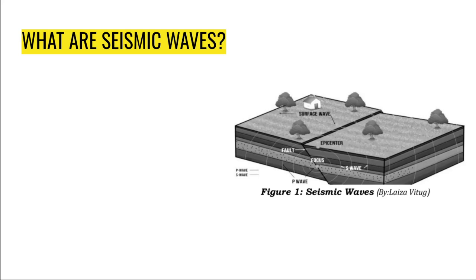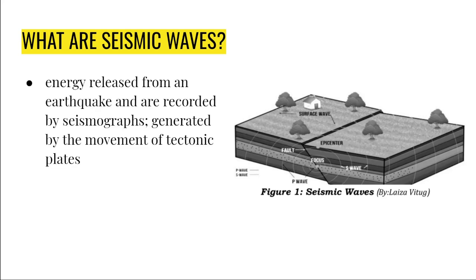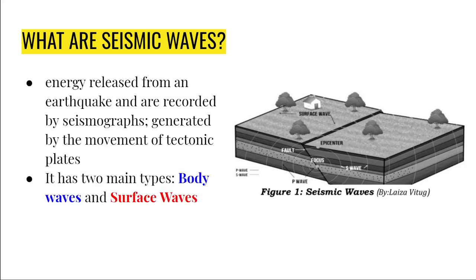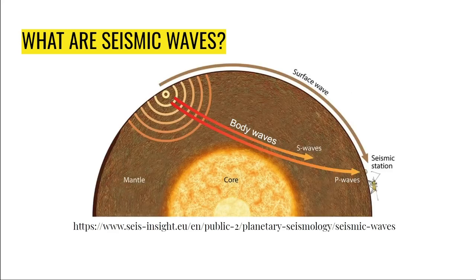Seismic waves are the energy released from an earthquake and are recorded by seismographs. They are generated by the movement of tectonic plates — also called earthquake waves. A seismic wave has two main types: body waves and surface waves. Body waves travel into the interior of the Earth, while surface waves travel through the crust.